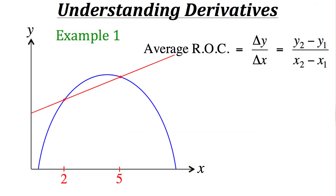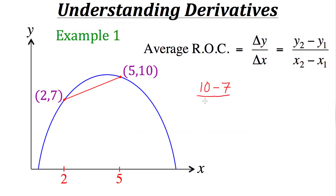The way we calculate slope is by taking the change in y and dividing it by the change in x. Using the x and y values from our two points: we take y2 which is 10, minus y1 which is 7, then divide by x2 which is 5, minus x1 which is 2. Simplifying: 10 minus 7 gives us 3 in the numerator, and 5 minus 2 gives us 3 in the denominator, so 3 divided by 3 gives us 1. So the slope of the secant line, or the average rate of change from x equals 2 to x equals 5, is 1.